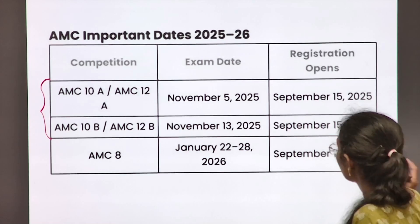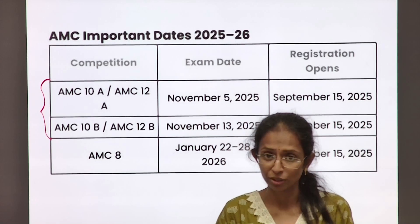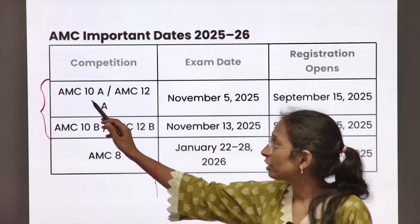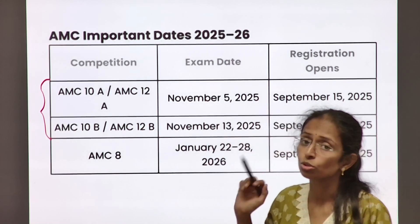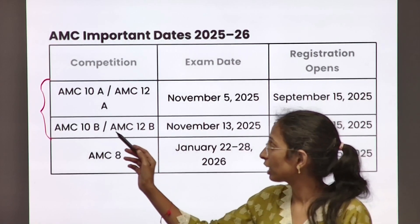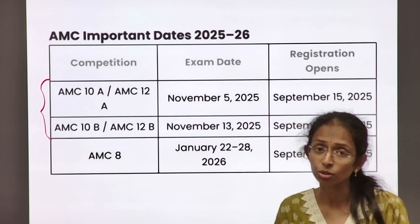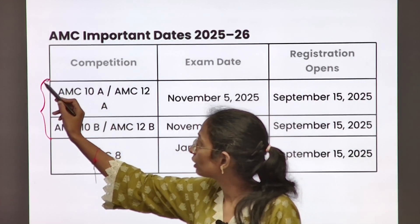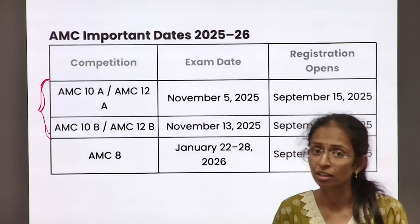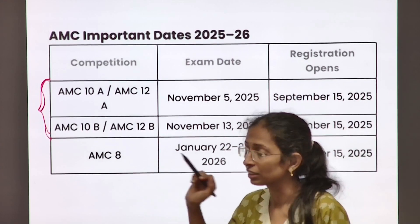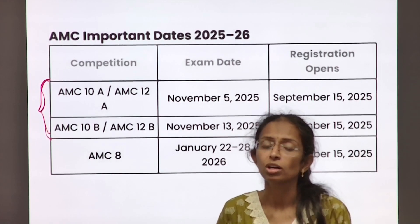Now coming over to the important dates released by AMC for 2025-26. For AMC 10A or 12A, the date is November 5th, 2025. For AMC 10B or 12B, the date is November 13, 2025. A student can select any of these two dates for AMC 10 or 12. But for AMC 8, the dates are January 22 to 28, 2026.